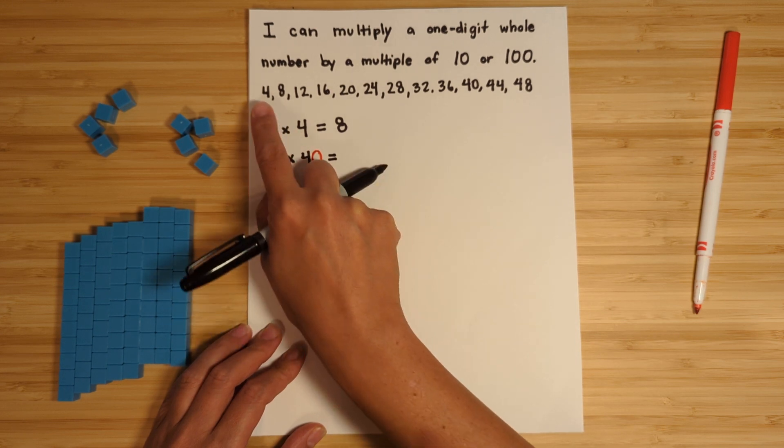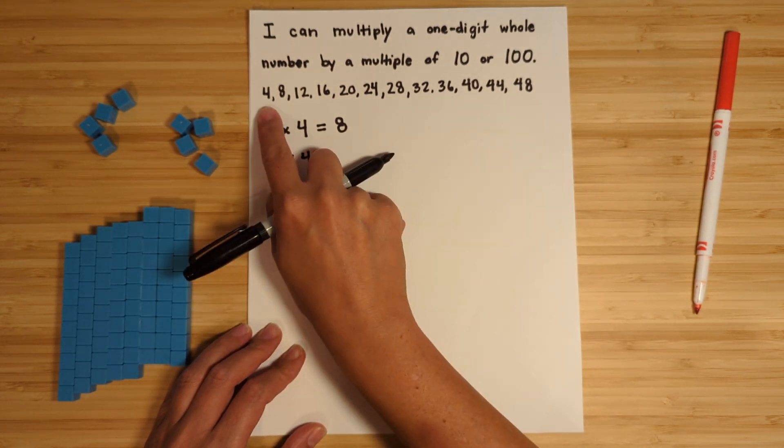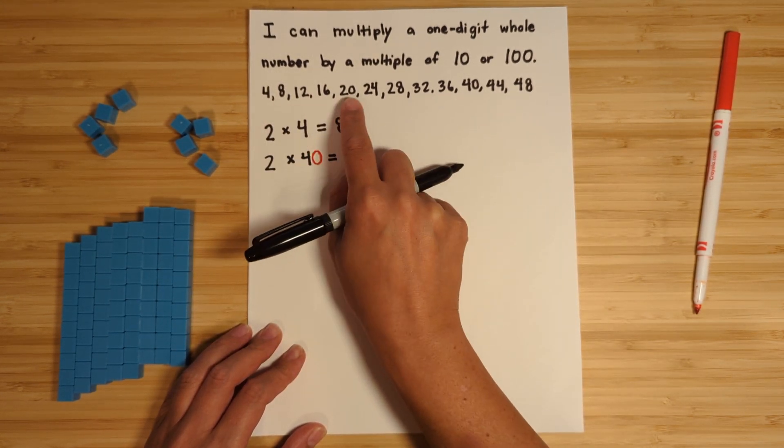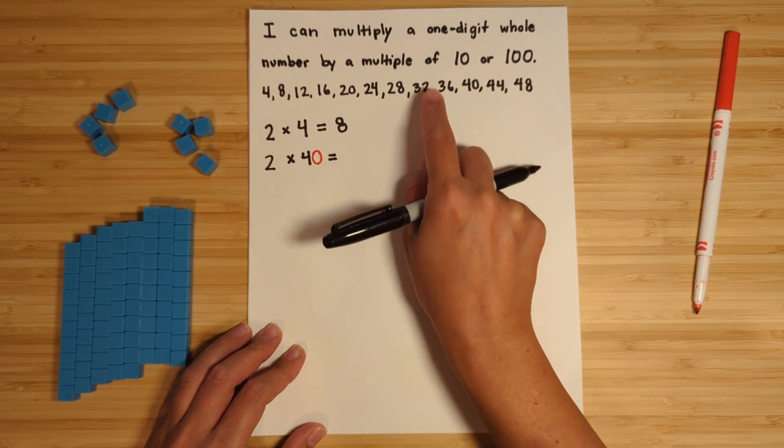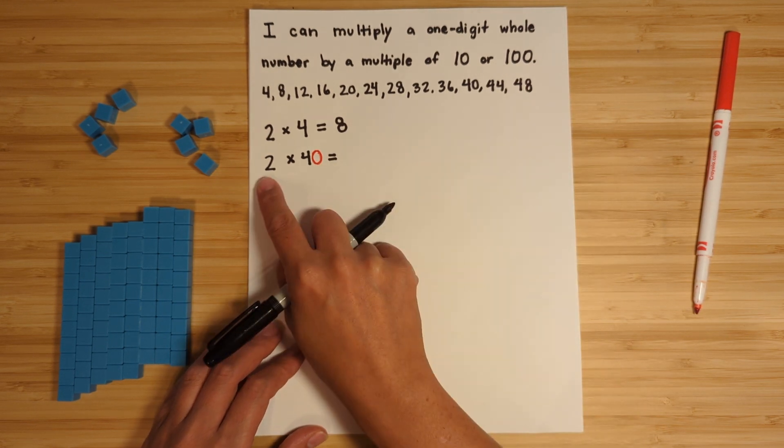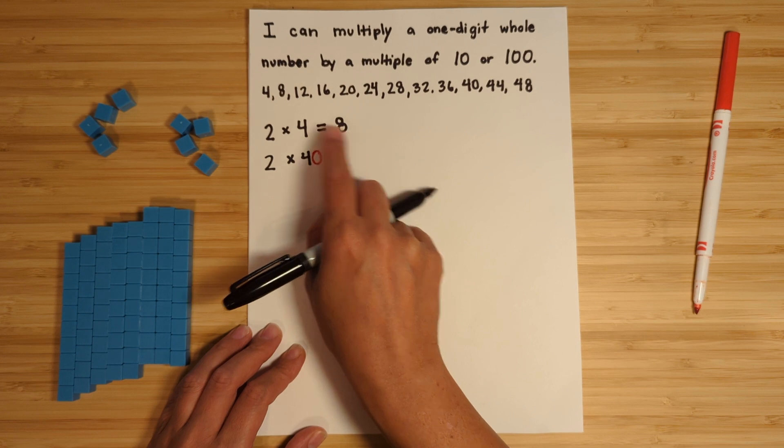So instead of four, think 40, 80, 120, 160, 200, 240, 280, 320, 360, 400, 440, 480. So what's two groups of 40? I know two groups of four is eight, so I know two groups of 40...